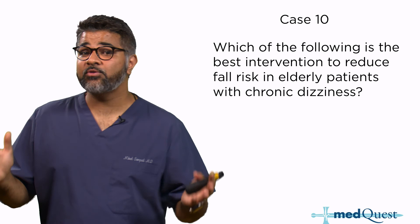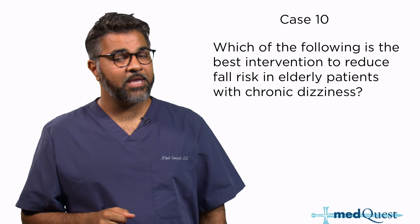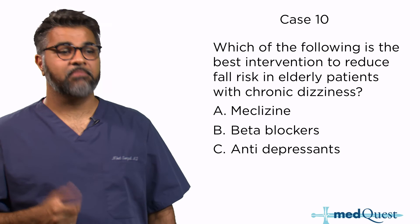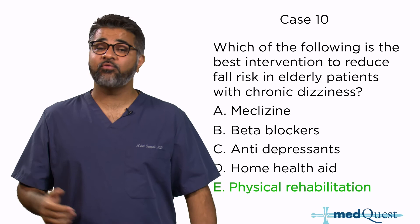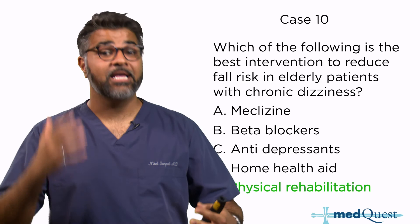Case ten: which of the following is the best intervention to reduce fall risk in elderly patients with chronic dizziness? The answer is physical rehabilitation. Any graded exercise regimen with balance training is incredibly helpful and has been shown to help stabilize elderly patients in their walking.